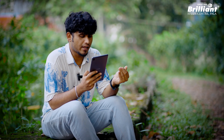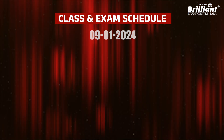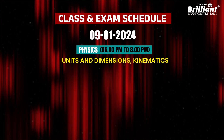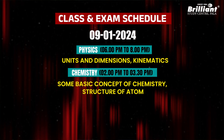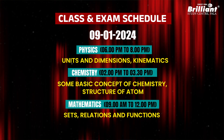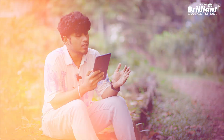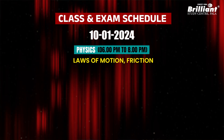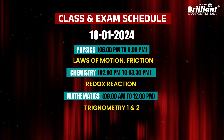The next topic in Physics is Units and Dimensions, and Kinematics. Chemistry covers Some Basic Concepts of Chemistry and Structure of Atoms. Mathematics covers Sets, Relations and Functions. The next topics are Physics — Laws of Motion and Friction; Chemistry — Redox Reactions; Mathematics — Trigonometry 1 and 2.